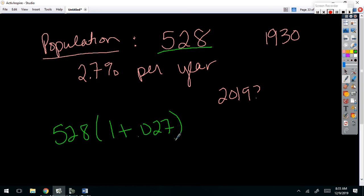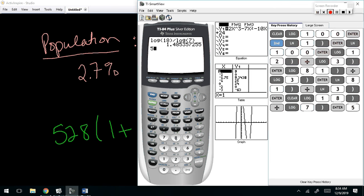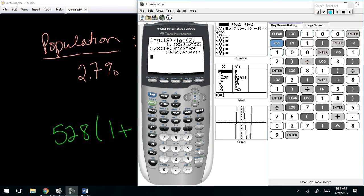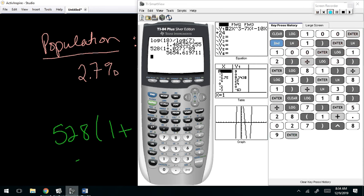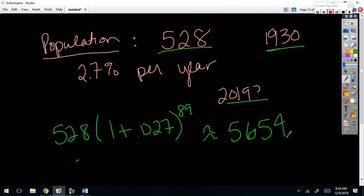And what are my years? How many years would that be? You're going from 1930 to 2019, which would be 89 years. So when you put this on your calculator, be very careful, especially about your parentheses. 528 times 1 plus 0.027 raised to the 89. Not as much growth as what I thought it was going to be. 5,654 people. So it took 89 years to go from around 500 to around 5,600.